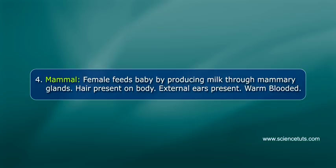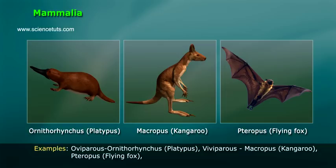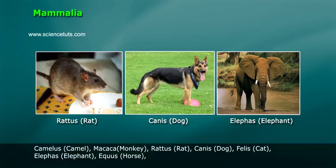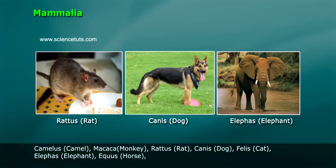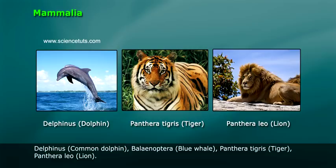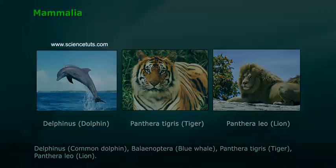Mammals: females feed babies by producing milk through mammary glands; hair is present on the body. Examples include oviparous Ornithorhynchus (platypus); and viviparous: Macropus (kangaroo), Pteropus (flying fox), Camelus (camel), Macaca (monkey), Rattus (rat), Canis (dog), Felis (cat), Elephas (elephant), Equus (horse), Delphinus (dolphin), Balaenoptera (blue whale), Panthera tigris (tiger), and Panthera leo (lion).